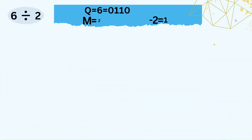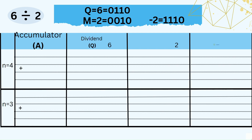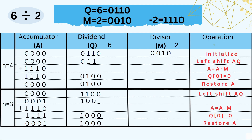Let us see another example: 6 divided by 2. Here Q (the dividend) is 6, which in binary is 0110, and M (the divisor) is 2, which in binary is 0010. We find −2 by taking the 2's complement of 2, which gives 1110. The number of steps required equals the number of bits in the dividend, so with 4 bits we require 4 steps, starting from N = 4. We initialize the accumulator to 0: A = 00000, dividend Q = 0110.